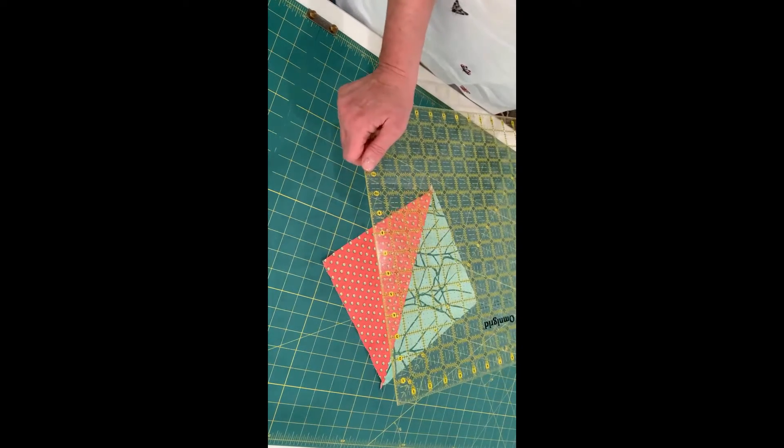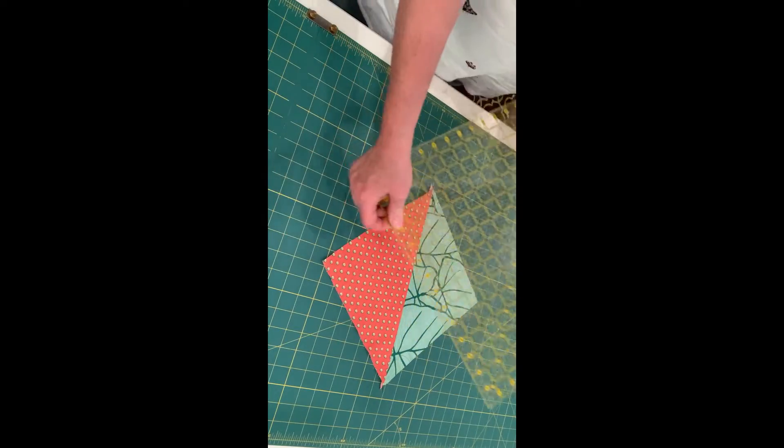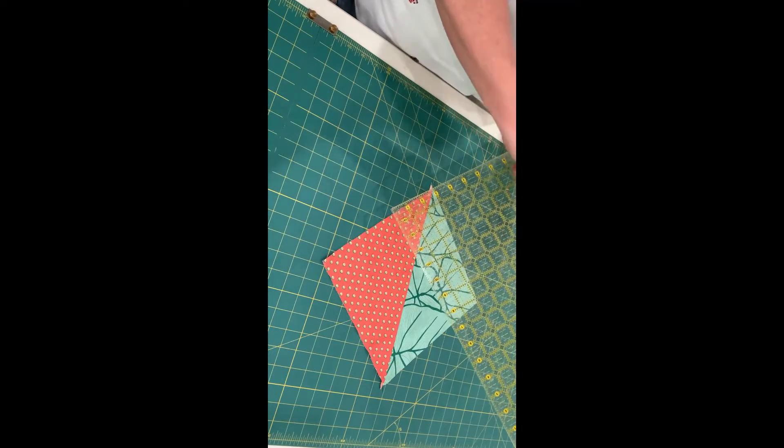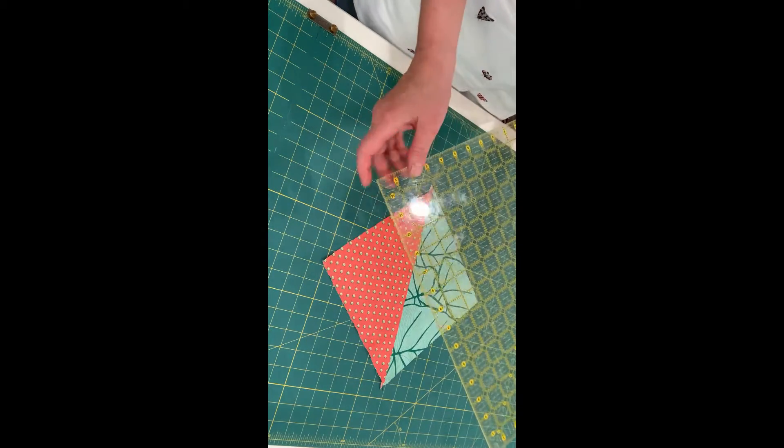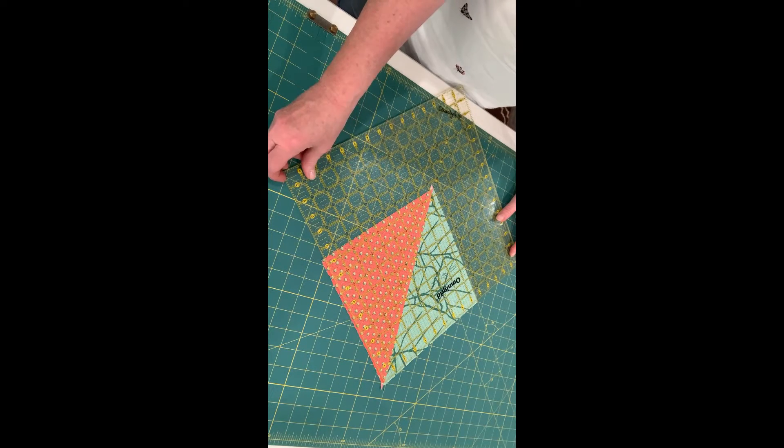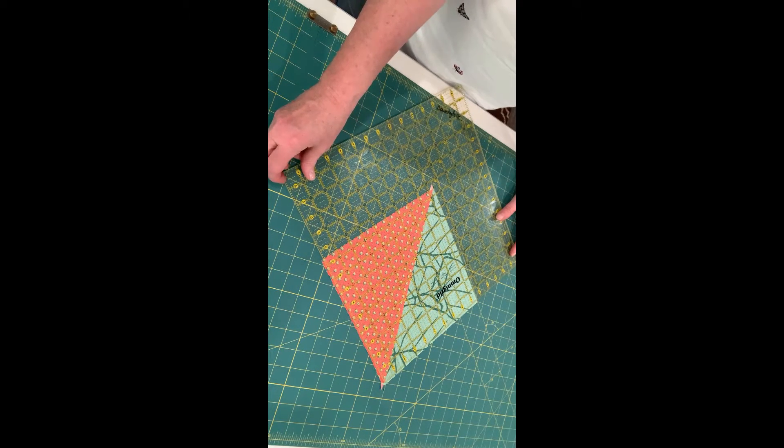So this ruler is a 15 inch square. And down the center of the ruler is a diagonal line, which is on a 45 degree angle. And what I'm going to do is line up that line with the center of the block where the two fabrics meet.